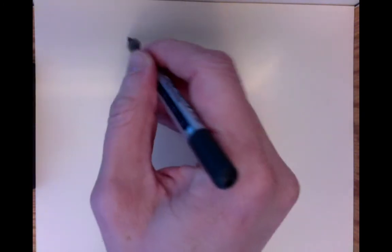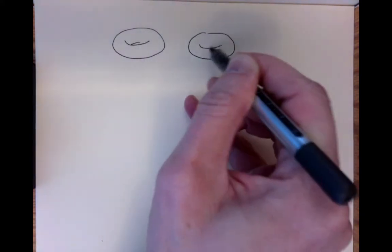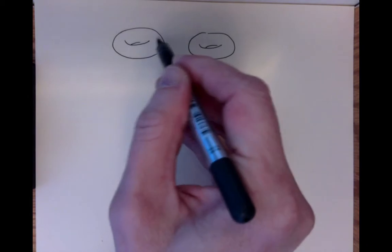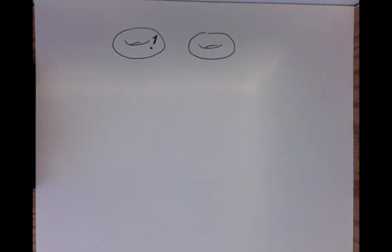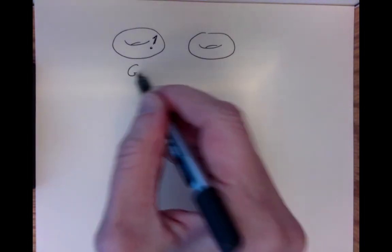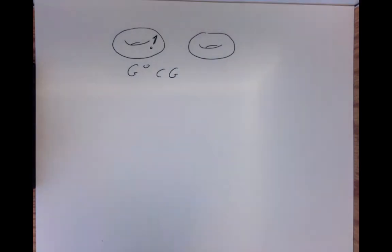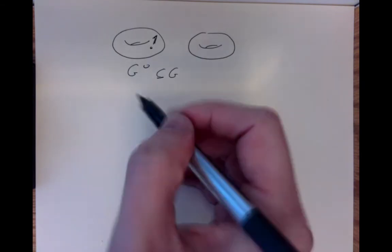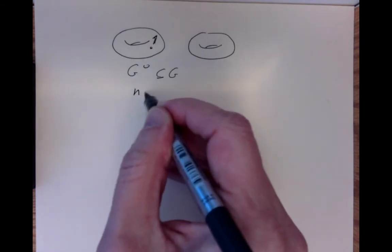As a first step in trying to understand the local picture of a Lie group, we can imagine trying to deal with the problem of multiple connected components. If we have a Lie group that has more than one connected component, only one of those components has the identity element on it, and that's where we'll be standing. So we consider the identity component, G0, contained in G. I'll leave you as a problem to show that it's actually a normal subgroup.